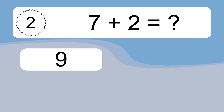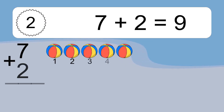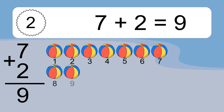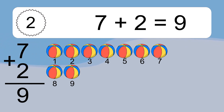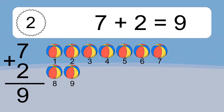Seven plus two equals what? Seven plus two equals nine. Let's count it: one, two, three, four, five, six, seven, eight, nine.